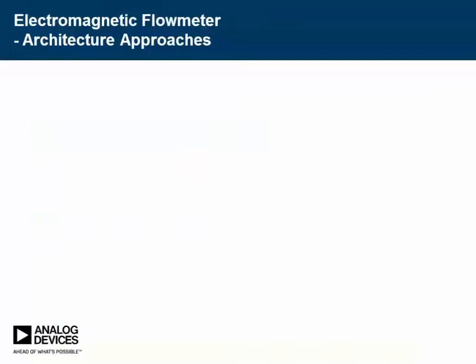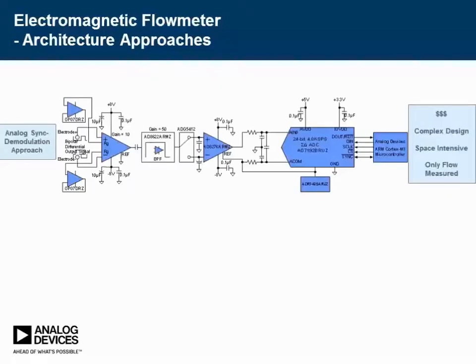Although the specific implementation could be very different from one manufacturer to another, the sensor signal conditioning circuitry for the electromagnetic flow meter can be classified into two major categories: the analog synchronous demodulation architecture and the digital oversampling architecture. The analog demodulation architecture is conventional but still widely used in the industry. It usually has a pre-amplifier, an amplifier with bandpass filter, sample-and-holds, analog-to-digital converter, and microcontroller.